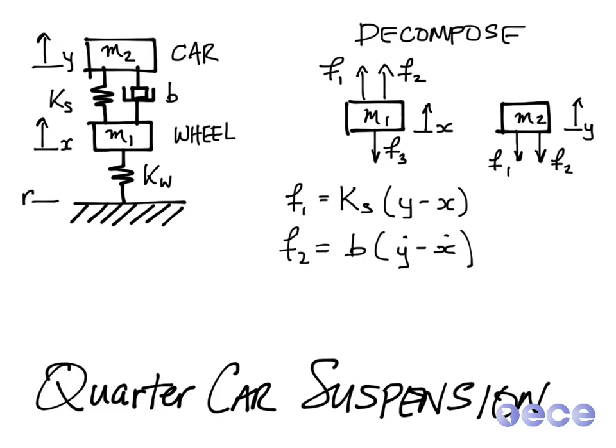So here we have F2 is B times Y dot minus X dot. So what's the difference in the rates of velocities of the masses at Y and X? And F3, because it's another spring, here we take the difference between X and the road. So if we think of the road as zero, then we just have Kw times X. So with these three values,